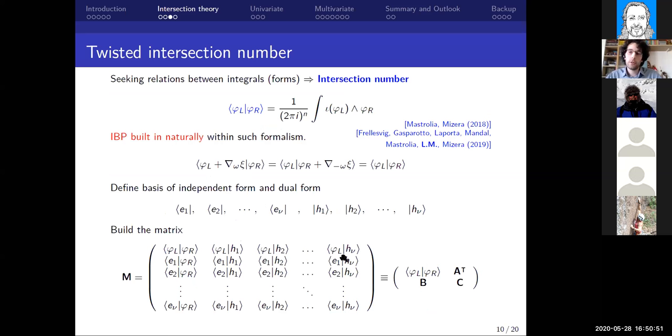Now going to the most important object of my talk, the intersection number. Let me explain how we can relate two different integrals. Bringing two forms which specify our Feynman integral, we can integrate over them to define the intersection number. In this way we have an object that naturally has IBPs built inside. Let me remind you that our forms phi_left and phi_right can be expressed in terms of a set of master forms, the independent ones, and then we can define one also for the dual basis.